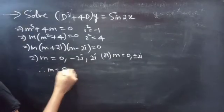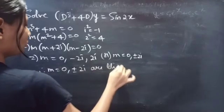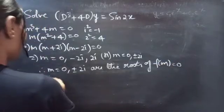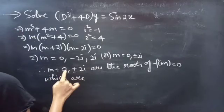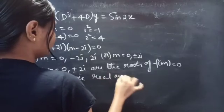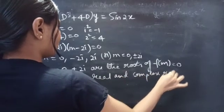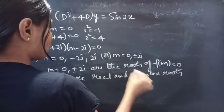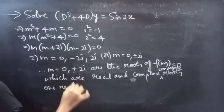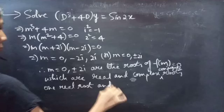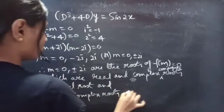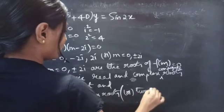Therefore m = 0 and m = ±2i are the roots of our auxiliary equation. We have one real root and two complex conjugate roots — specifically, two purely imaginary roots.